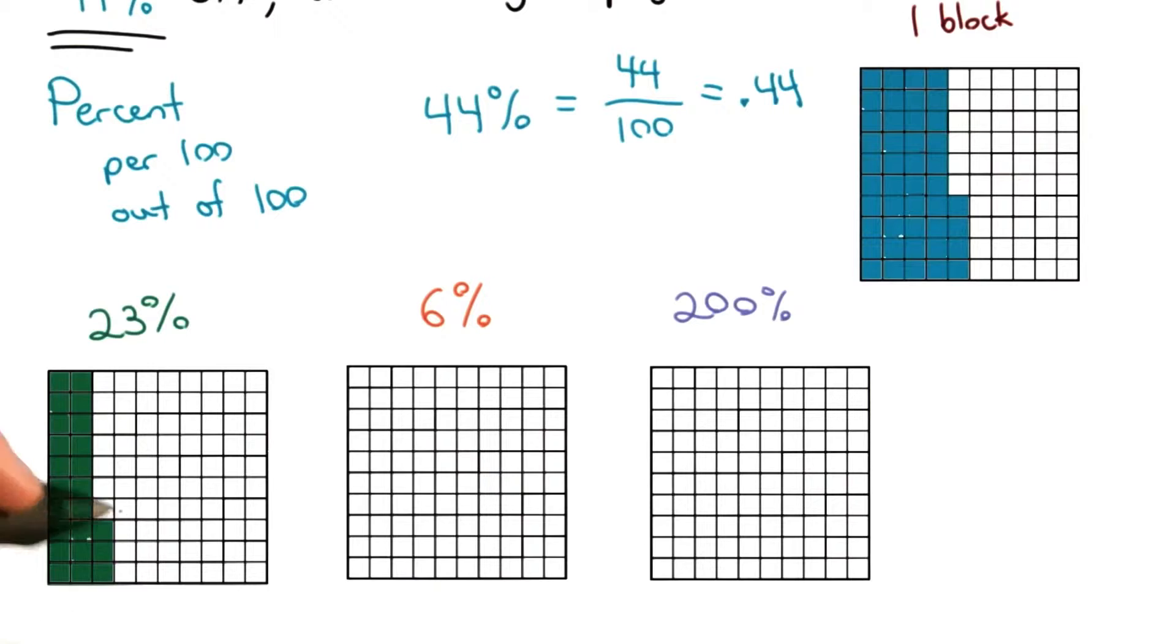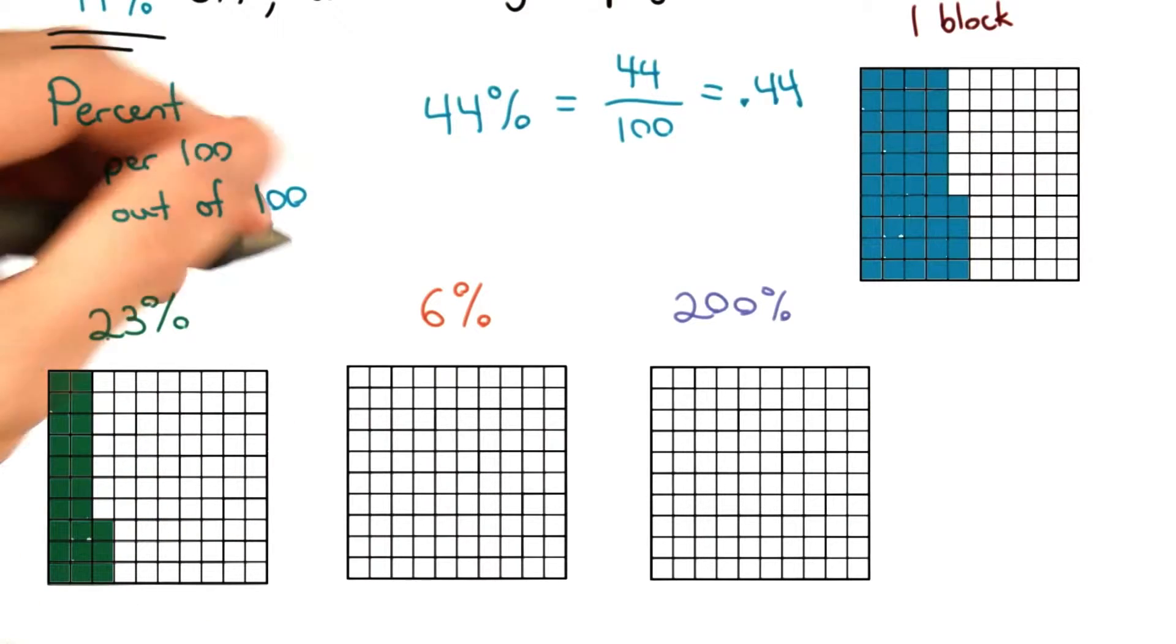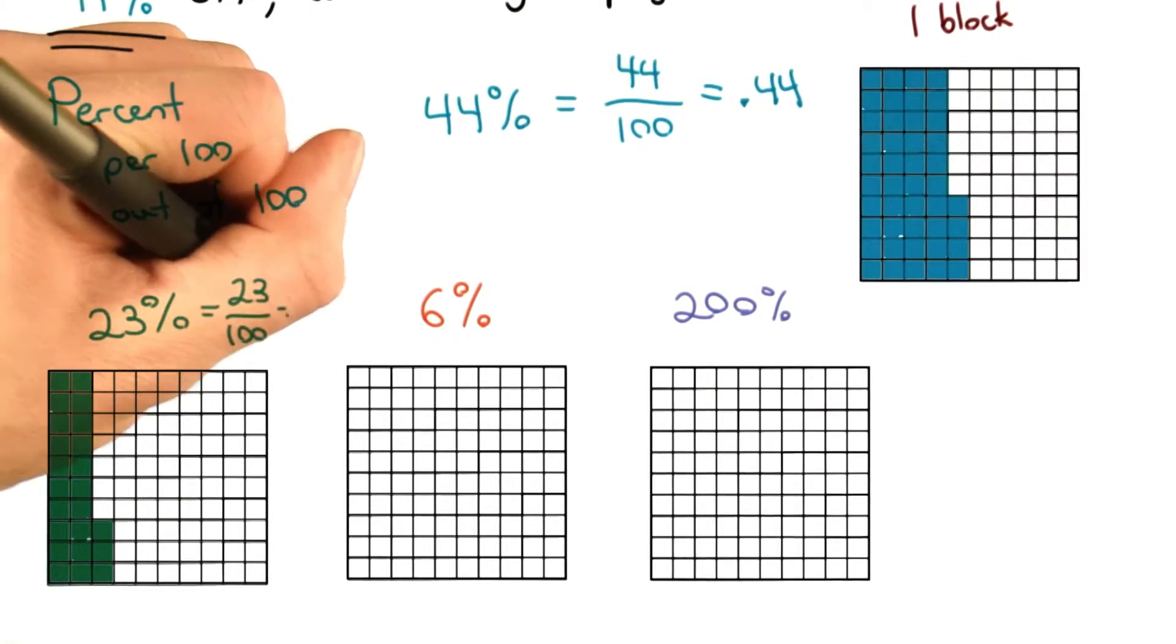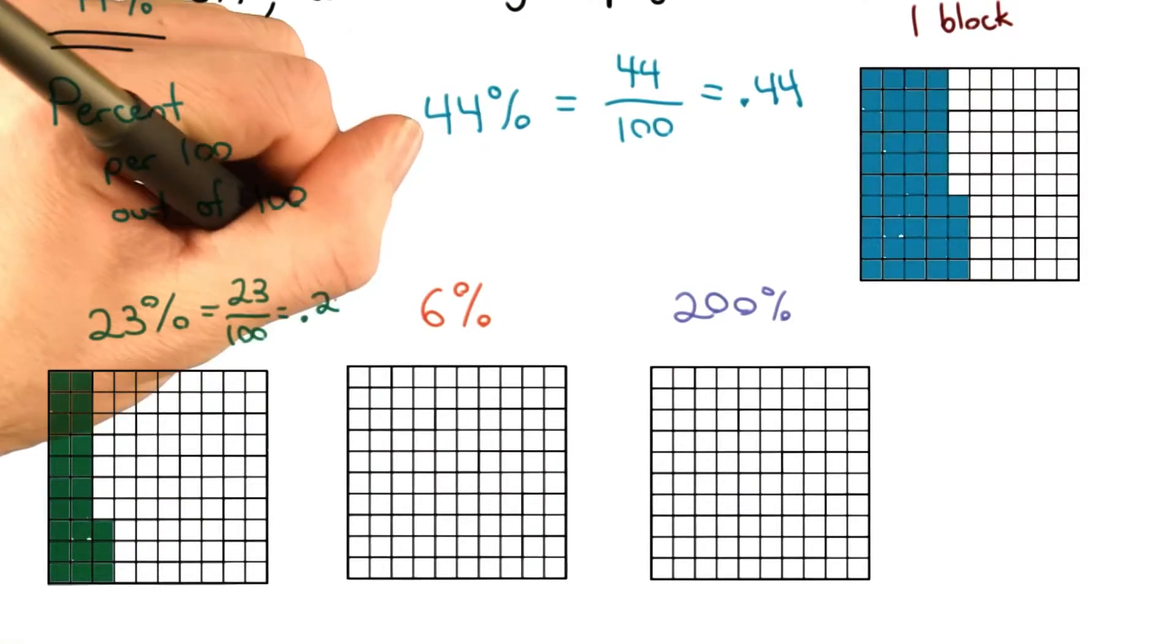Here I have 23 squares shaded out of a hundred. So 23 divided by a hundred. As a decimal, that's 23 hundredths.